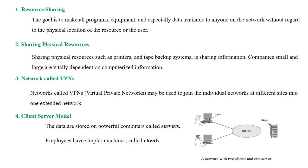The next one is sharing physical resources. Physical resources means, for example, a printer. A particular printer can be shared with all the systems connected in the network. If it is a LAN network, only one printer can be used to print information from all the computers — that is known as sharing physical resources. The next one is VPN, which stands for Virtual Private Network, which can be used to join individual networks at different sites to extend the network.